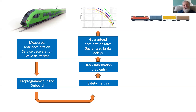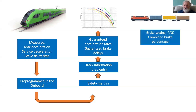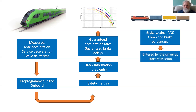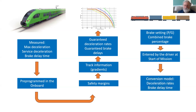If our train is made up of variable wagons, then we need to use the lambda model. The driver will enter the brake setting as passenger or goods, and the combined brake percentage for the train. That is entered at the start of the mission and is then used through a conversion model to generate deceleration rates and brake delay times, which feed into the same safety margins and track information to generate a similar output.